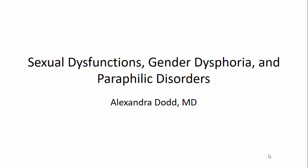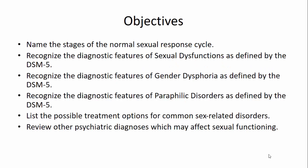We're going to name the stages of the normal sexual response cycle, cover sexual dysfunctions, gender dysphoria, and paraphilic disorders as defined by the DSM-5, and list some possible treatment options for these disorders. Then we're going to review some other psychiatric diagnoses that can affect sexual functioning at the end.